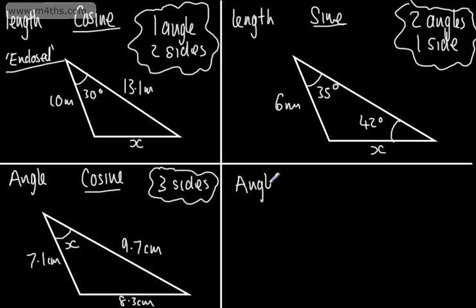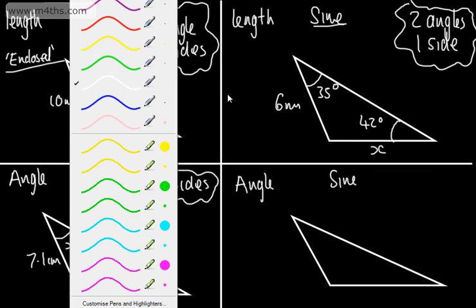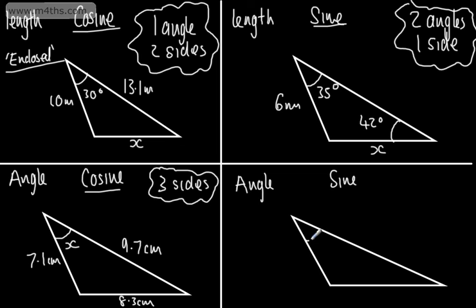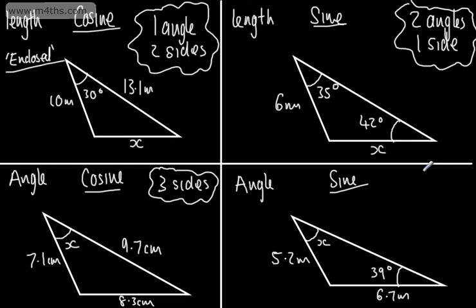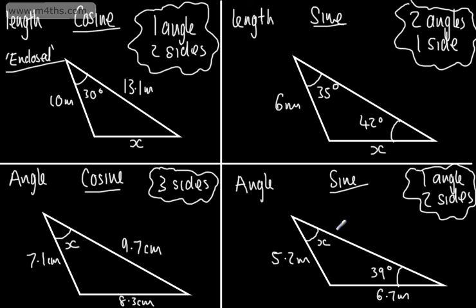Now let's look at finding a missing angle using the sine rule. Drawing a triangle with angle x that we want to find, a known angle of 39 degrees, and sides of 5.2 meters and 6.7 meters. We use the sine rule to find a missing angle if we have one given angle and two given or known sides. Again, we have a non-enclosed angle. If you want to think of cosine as 'enclosed' and sine rule as 'non-enclosed', that may help you out.